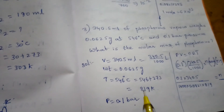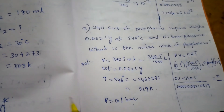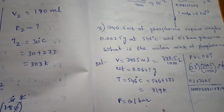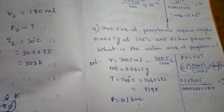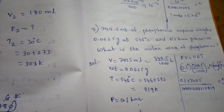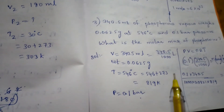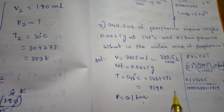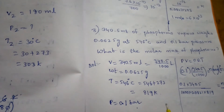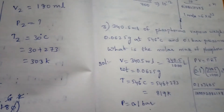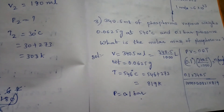Summary: Charles's law — volume is proportional to temperature. Gay-Lussac's law — pressure is proportional to temperature. Molar volume is the volume occupied by one mole of an ideal gas at STP, which is 22.4 liters. The ideal gas equation is PV = nRT, where P is pressure, V is volume, n is number of moles, R is the universal gas constant, and T is absolute temperature in Kelvin. Thank you for watching — please share and subscribe.